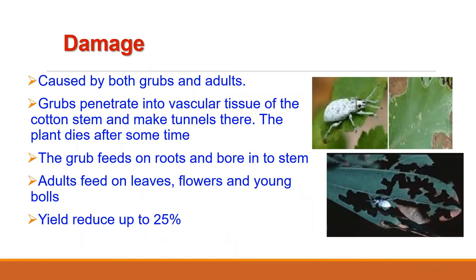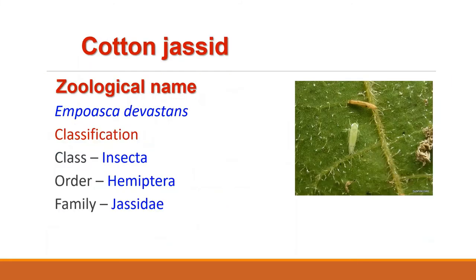Regarding damage, both grubs and adults are damage-causing stages. Grubs feed on the roots while adults feed on leaves, flowers, flower buds, and cotton bolls. Their head is snout-like and they have pincer-like jaws. Grubs penetrate into the vascular tissue of the stem, and pupation occurs in the soil within earthen cells. They may cause 5% to 30% loss of yield.